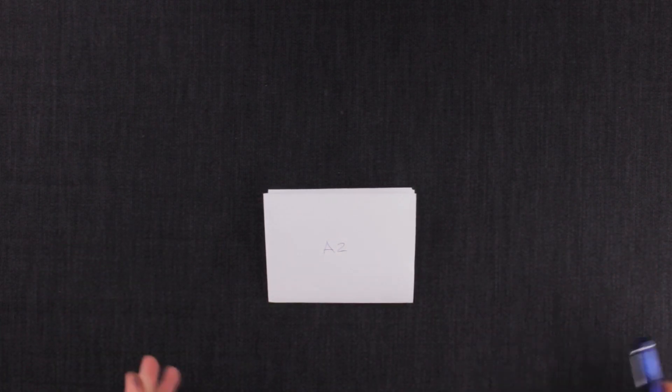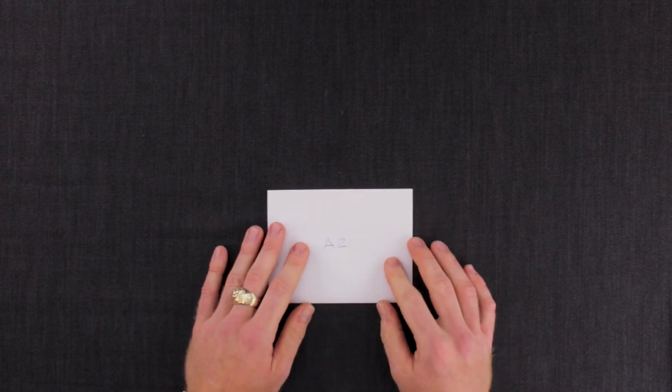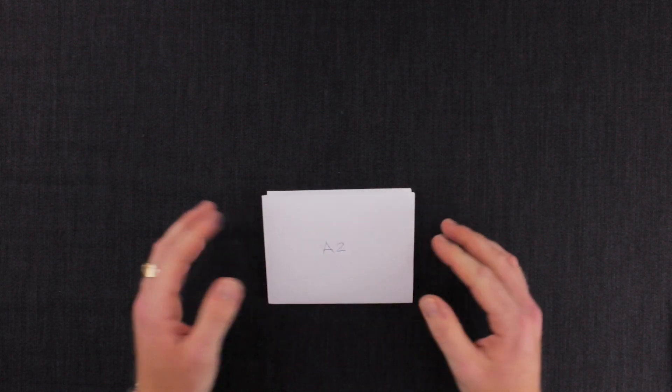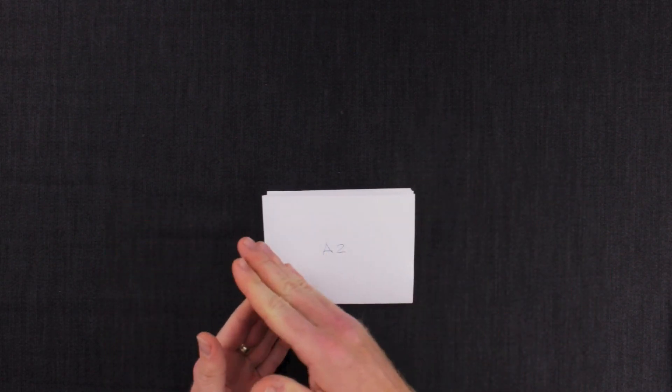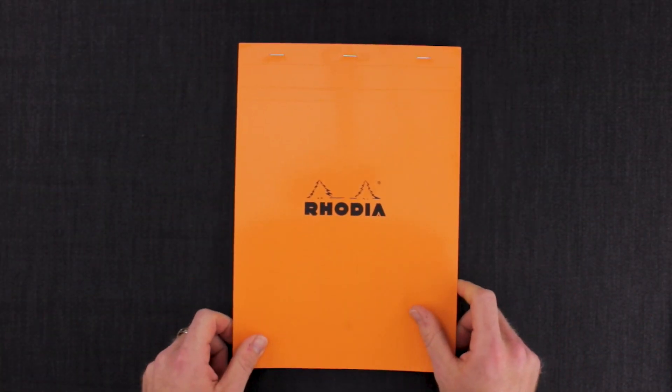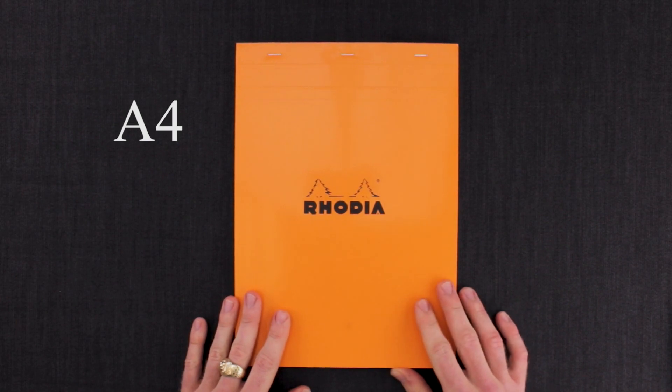Where we come into kind of our notebook sizes is starting with the A4 size. So this would be the giant size. You're gonna fold this again, half that again. That gets you to the most common size, A4. It's your standard Rodeo number 18 notepad.